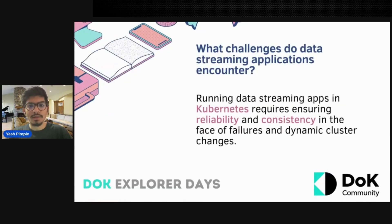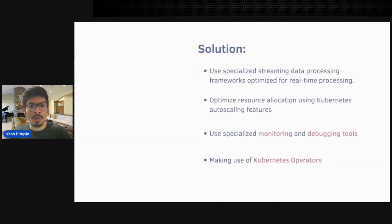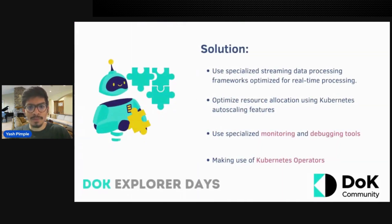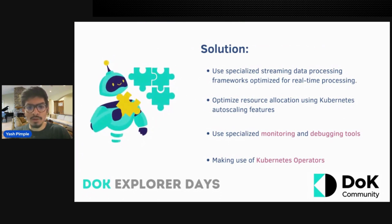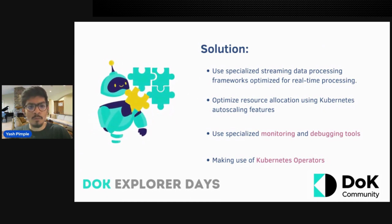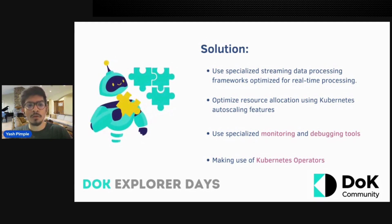What are the challenges Data Streaming applications encounter? Running Data Streaming applications in Kubernetes requires ensuring reliability and consistency in the face of failures and dynamic cluster changes. To overcome such challenges, you need a specialized streaming data processing platform optimized for real-time processing, optimized resource allocation using Kubernetes auto-scaling, and monitoring and debugging tools such as Prometheus and Grafana, as well as making use of Kubernetes operators.